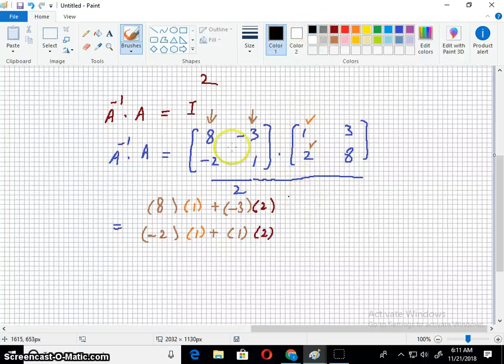Now again take this column of the first matrix and multiply it with this number three. And now put a positive sign. Again take this column, which is negative three and one, and multiply it with this number, which is eight. And close it with your brackets.